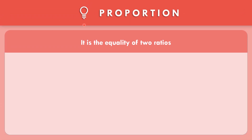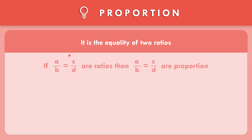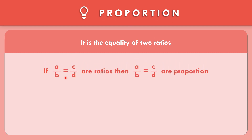What is proportion? Proportion is the equality of two ratios. So if the given has two ratios, that is a proportion. If A over B equals C over D are ratios, so we have two ratios, then A over B equals C over D is a proportion.